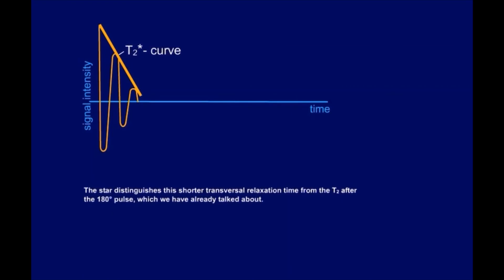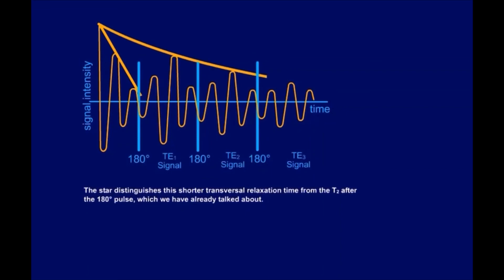A curve describing the signal intensity in that case is the T2 star curve. The star distinguishes this shorter transversal relaxation time from the T2 after the 180-degree pulse, which we have already talked about. The corresponding effects are named T2 star effects. These T2 star effects are important with the so-called fast imaging sequences. We will hear about them later.